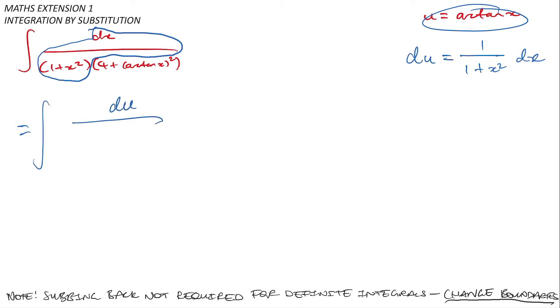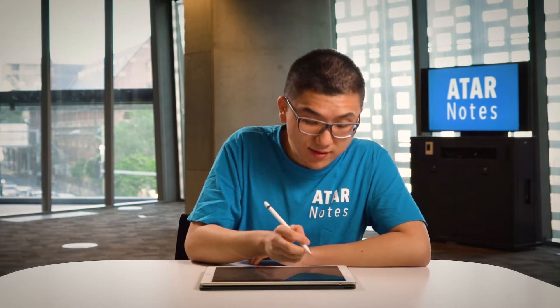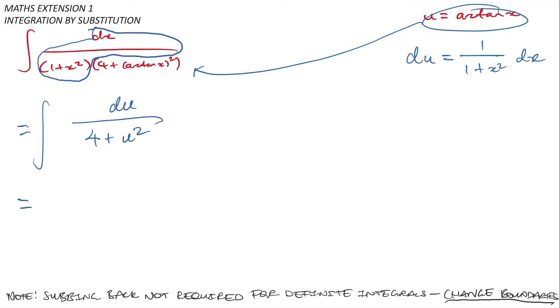And then everything left untouched, well I see 4 plus arc tan of x all squared here, and I've used u equal to arc tan of x so I'll sub that in to obtain 4 plus u squared. And once I do that I'll obtain an expression that I know how to integrate.